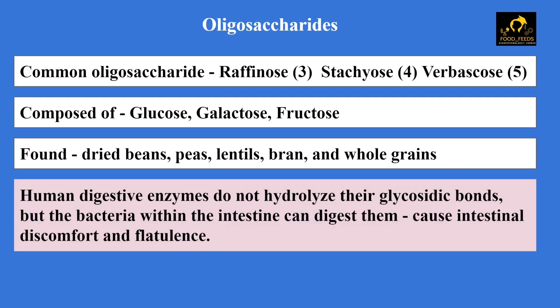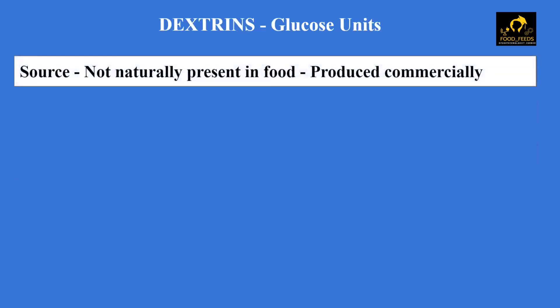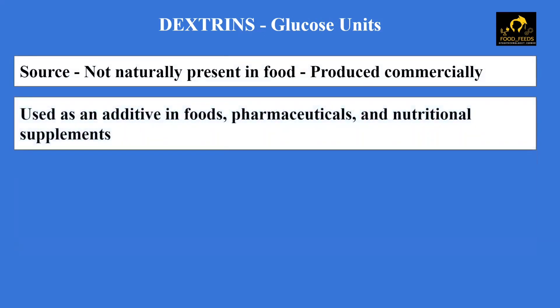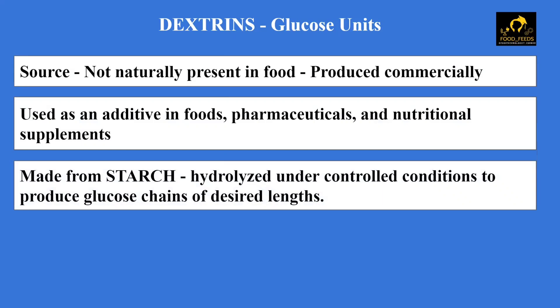Now let's learn about dextrins, which is one of the important oligosaccharides. They are composed entirely of sugar units but are not naturally present in food. Instead, they are produced commercially and used as an additive in food, pharmaceuticals, and nutritional supplements. They are made from starch, which is hydrolyzed under controlled conditions to produce glucose chains of desired lengths.